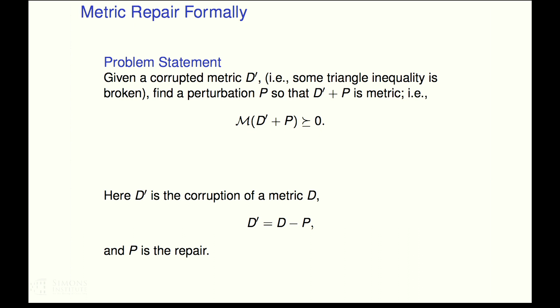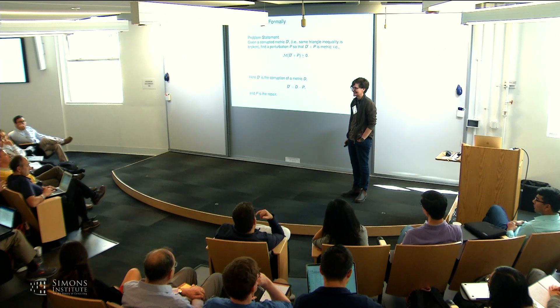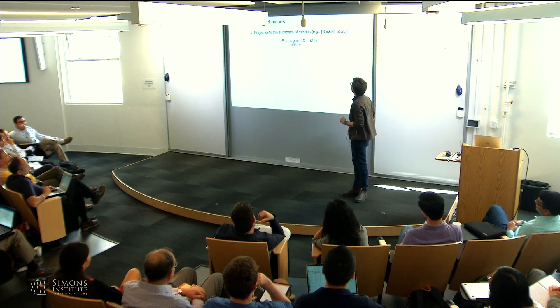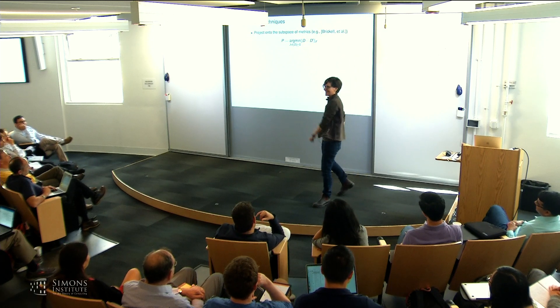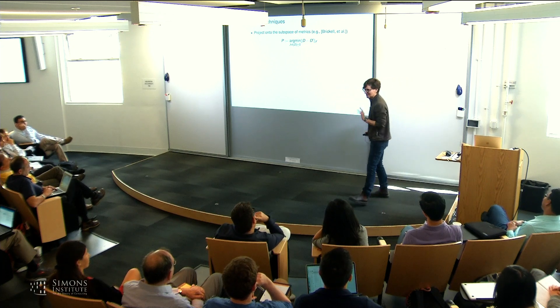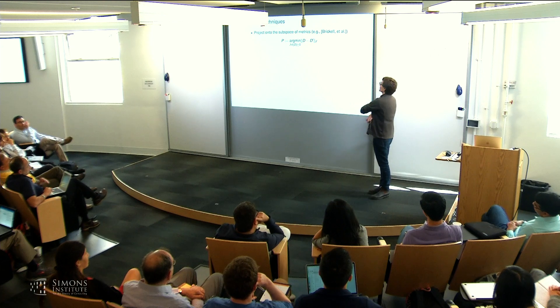We also want to somehow preserve that this perturbation is small in some sense so that D prime plus P is close to D prime. There are lots of ways to do this. I would like to make this as small as possible, actually. So there are a whole bunch of different ways to do this.